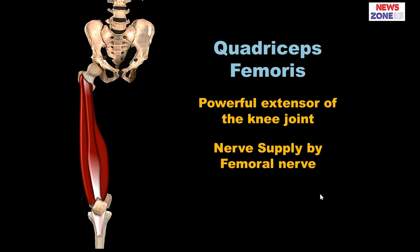Now we will discuss about the quadriceps femoris. Quadriceps femoris are those muscles which basically form the extensor compartment of the thigh. They are the powerful extensors of the thigh, all supplied by the femoral nerve. These muscles come from different areas but share the same insertion because the tendons join to form a common tendon called the quadriceps tendon, which passes over the patella. After the patella, the tendon is named the patellar ligament or patellar tendon and inserts into the tibial tuberosity.